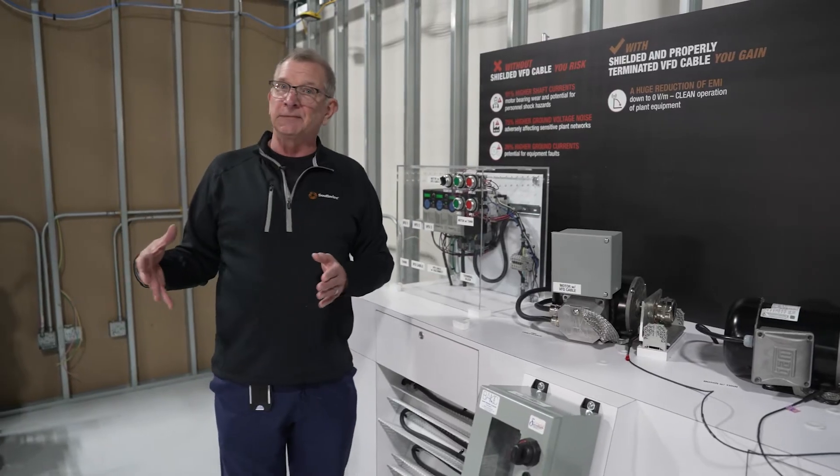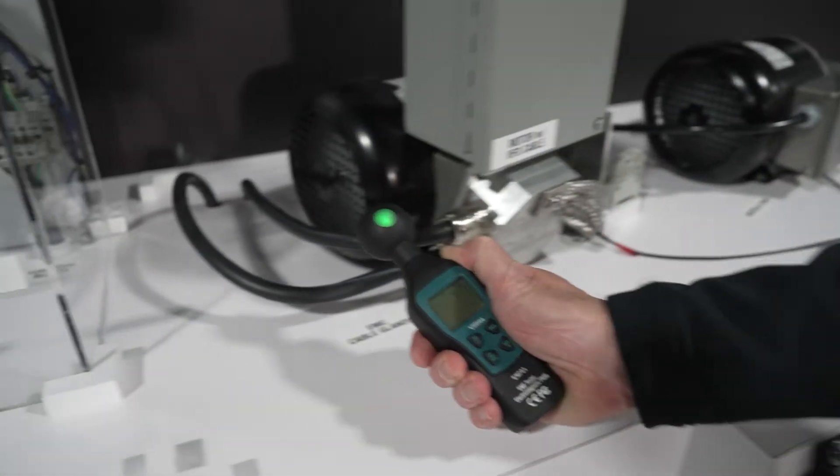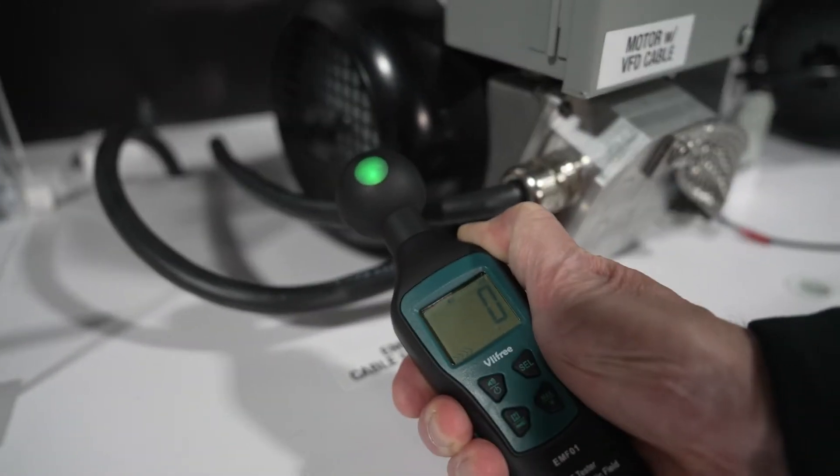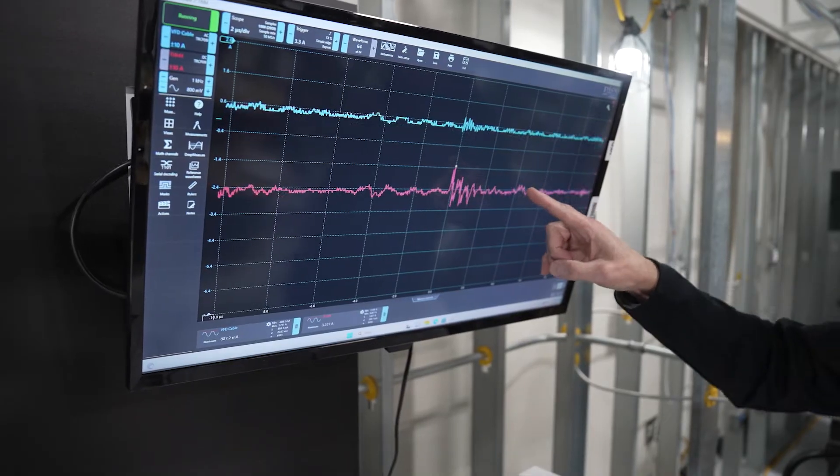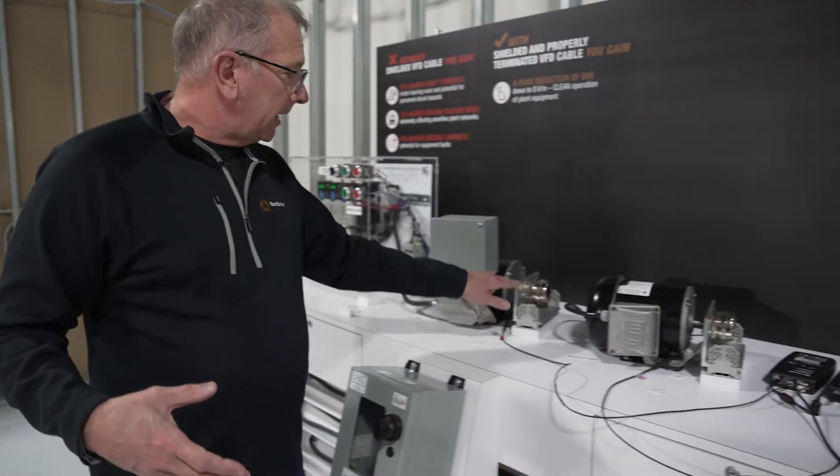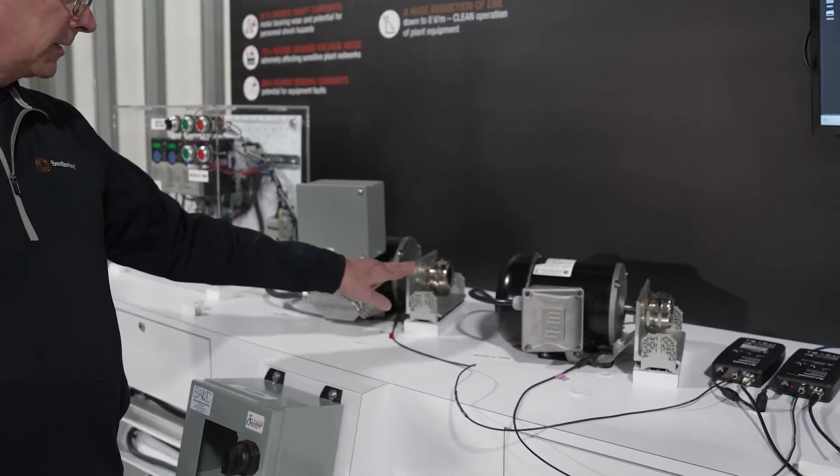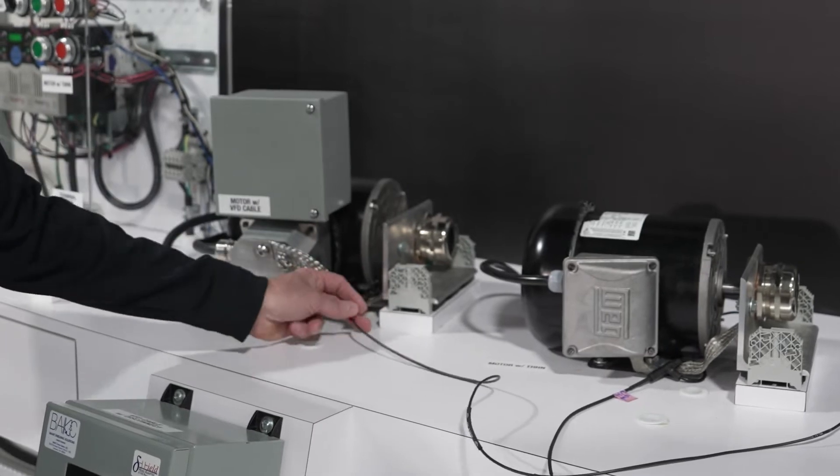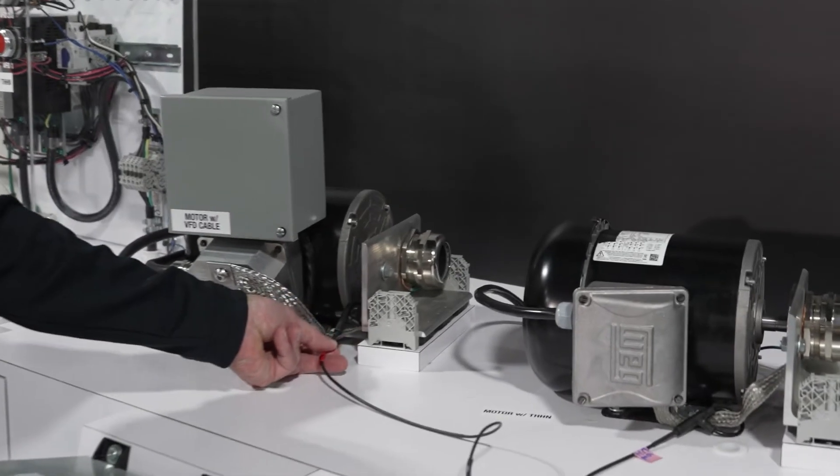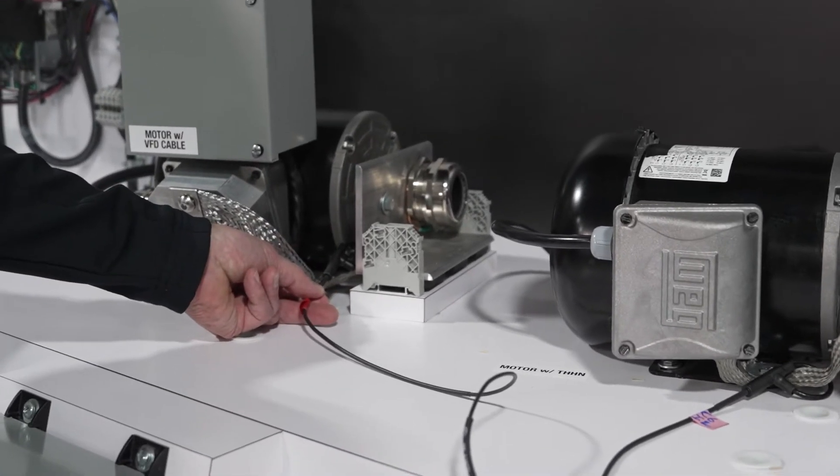We're going to take a look at a couple different parameters. We're going to look at EMI, Electromagnetic Interference, and we're going to also look at motor shaft currents. We're measuring the shaft current because we bonded these shafts to this plate here, and we're taking a current probe and measuring the current going to ground from the motor shaft.